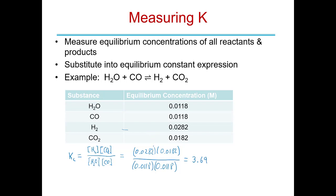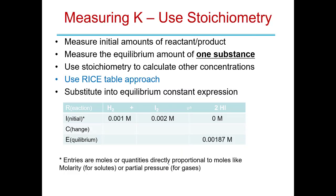This K is a little bit greater than one but pretty close, so we'd expect relatively equal amounts of reactants and products — it maybe slightly favors the products, but only slightly. That's one way to determine the value of equilibrium constants. The second way, perhaps more common, is to use stoichiometry.